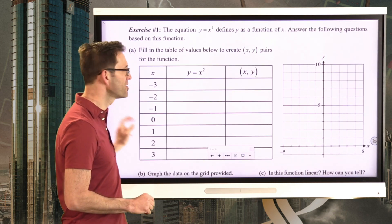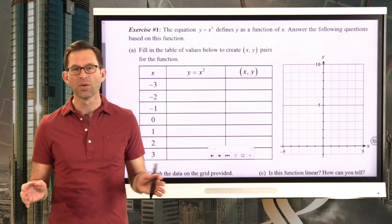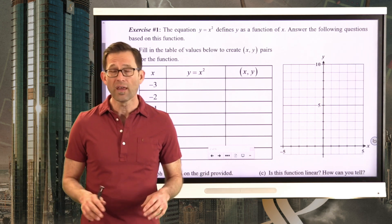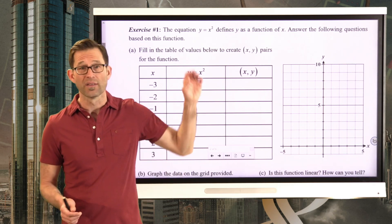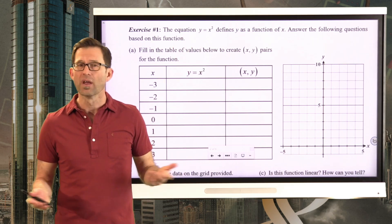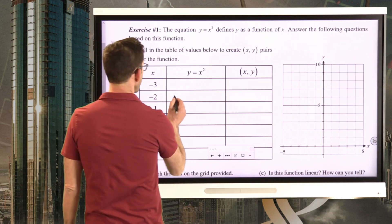The equation y equals x squared defines y as a function of x. In letter a, fill in the table of values below to create x, y pairs for the function. I just want to graph this thing and see what it looks like. If all the points end up lying in a straight line, then this isn't a non-linear function. Creating points from this function rule is pretty easy — all I'm going to do is take my input and square it.